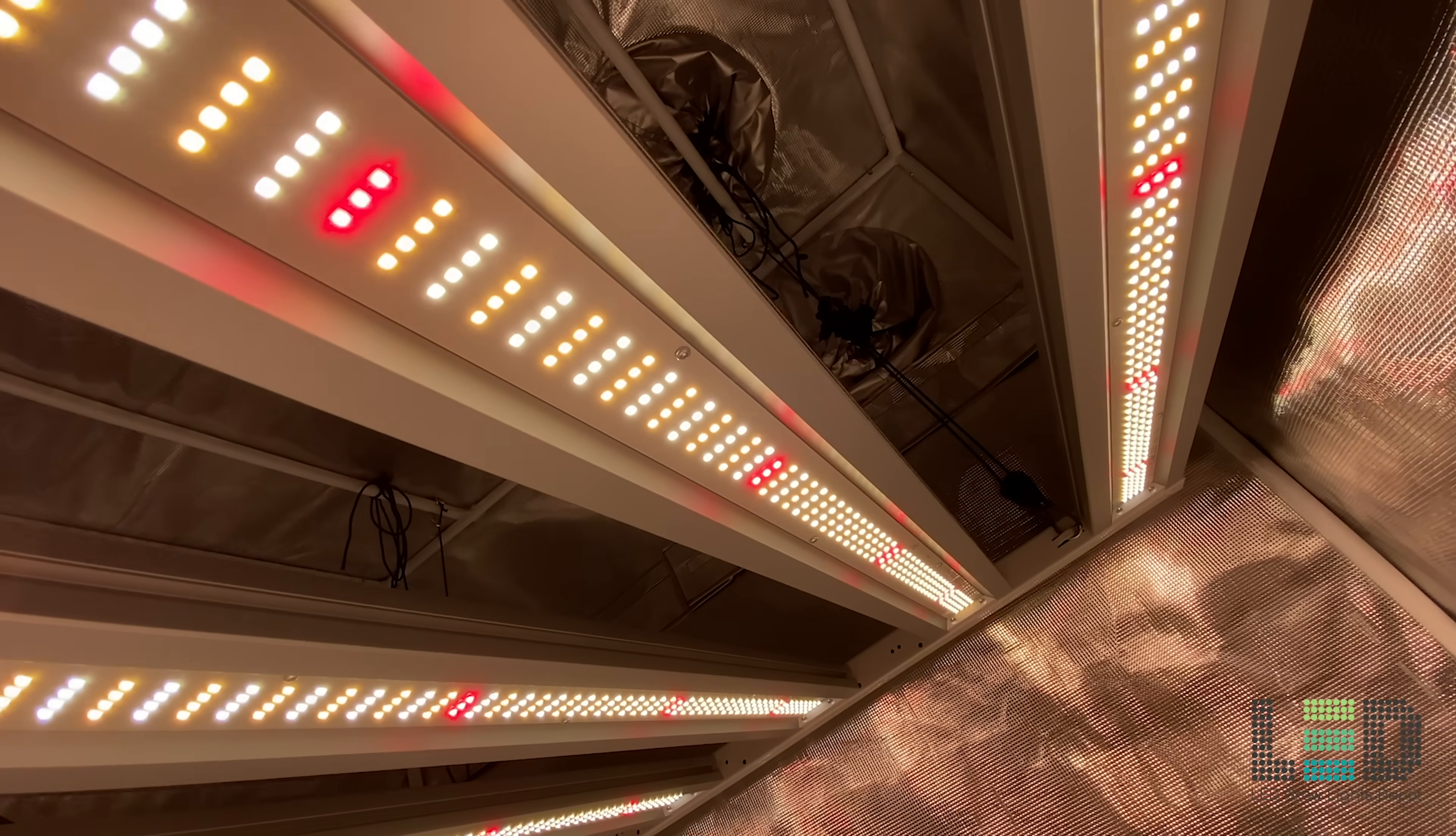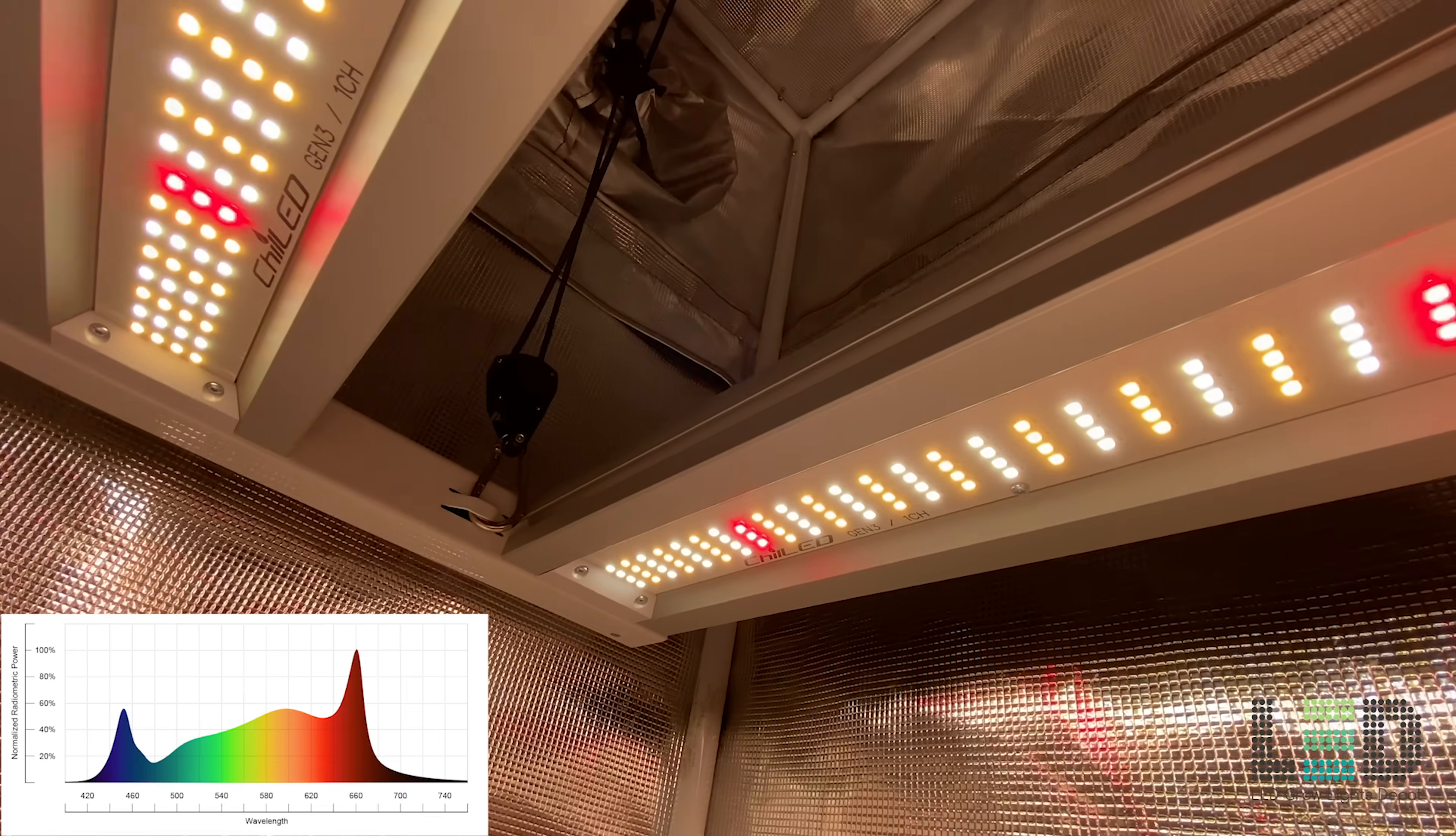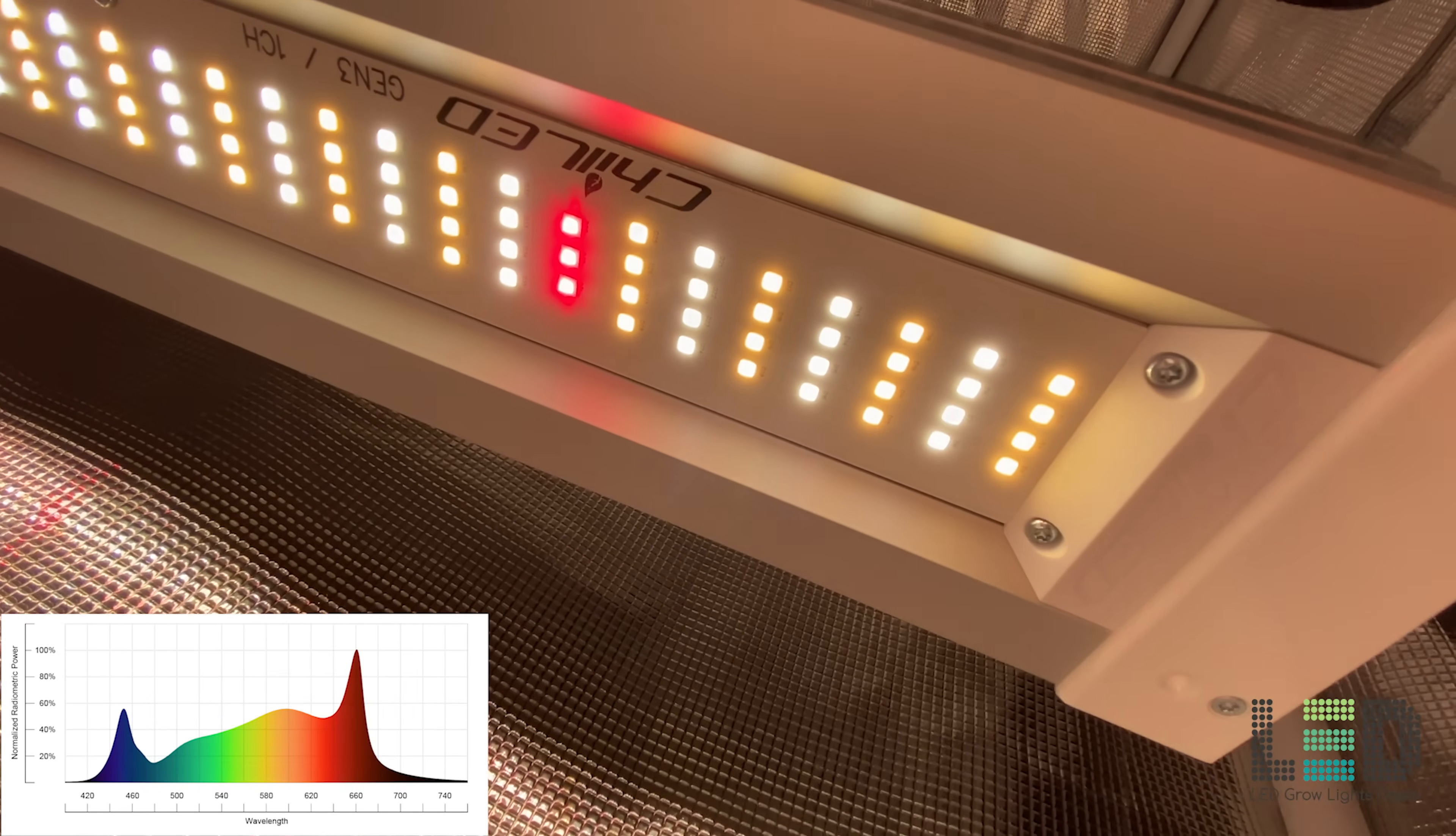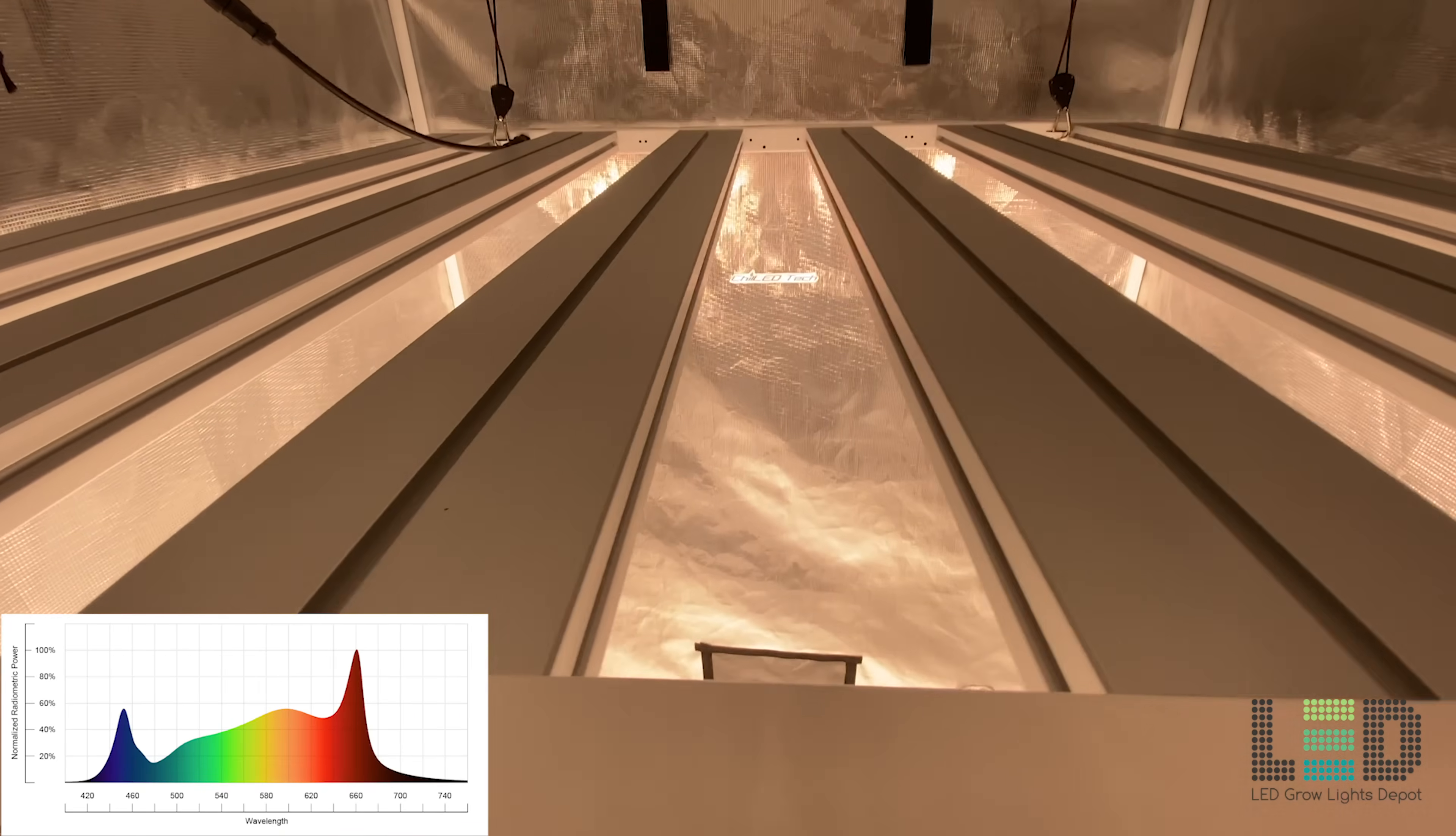The 3rd generation Growcraft Yield Max Spectrum is made up of 3000k, 5000k, and 660 nanometer red diodes. There is some far red present in the spectrum from the white diodes. However, there is not any UV diodes in the fixture. The spectrum can be used for all growth stages including seedlings or clones, veg, and flower all the way through harvest.